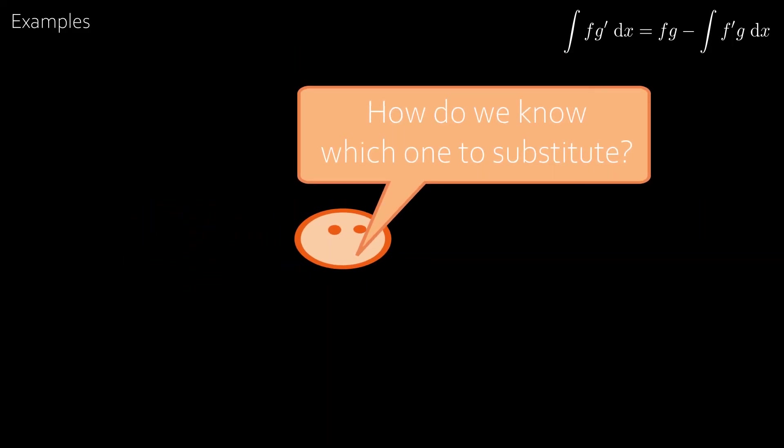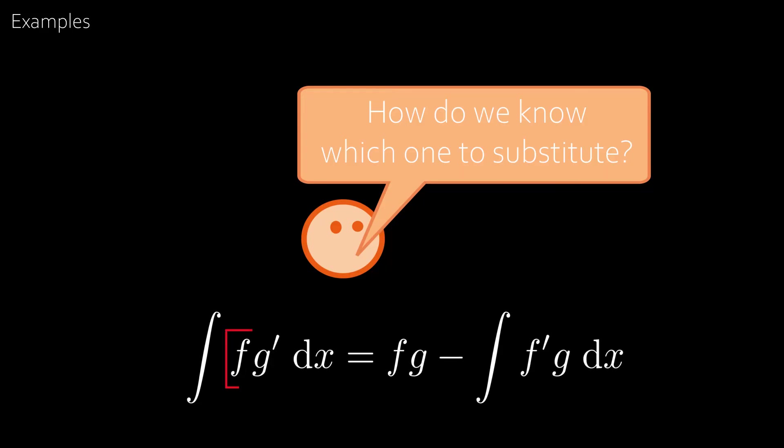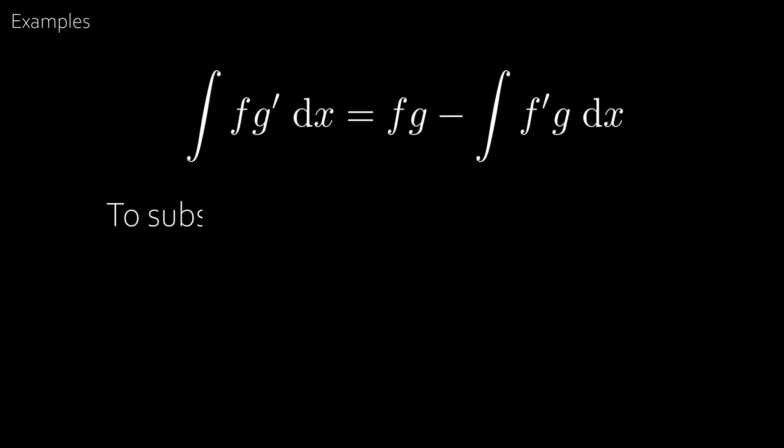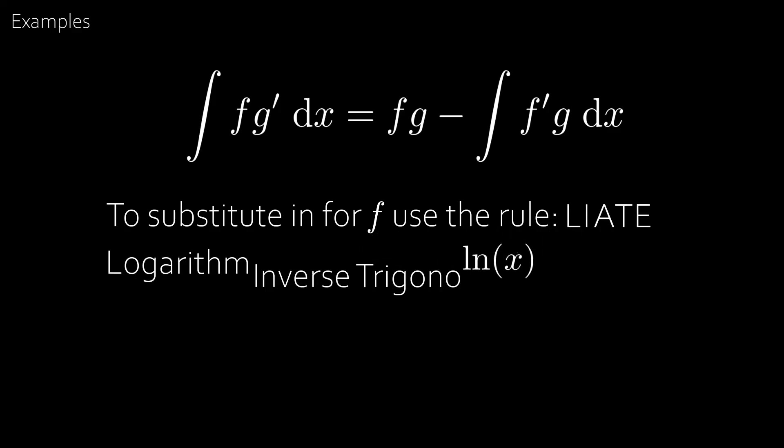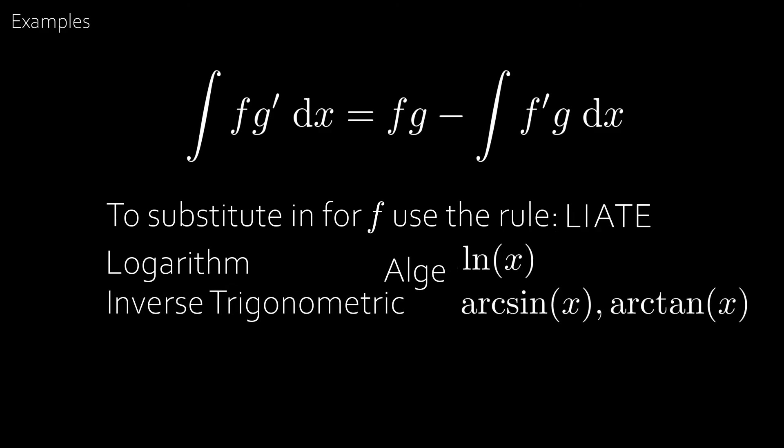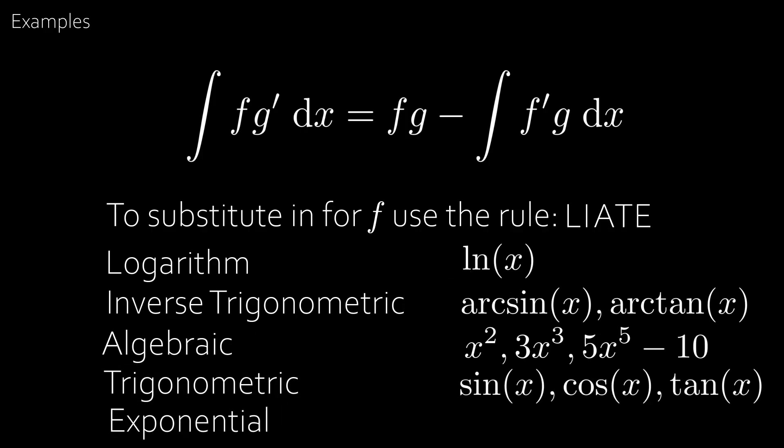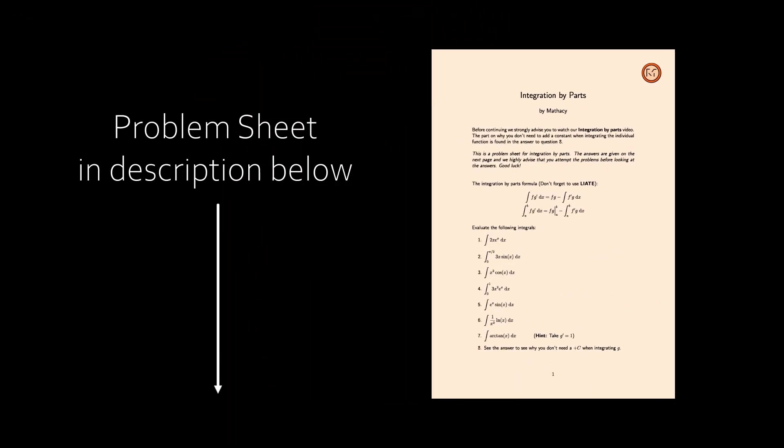Now you're probably thinking how do we know which one to substitute? Because in the formula we could sub in for f or we could sub in for g dash. So to get this right every time the best rule to learn is that to substitute in for f we use the rule LIATE. And LIATE stands for logarithm, inverse trigonometric functions such as arc tan and arc sine, algebraic such as x squared x cubed, trigonometric such as sine cosine tangent and exponential. And what you do is you substitute in for f in the order of LIATE. And to practice this check out our problem sheet in the description below which also has the second special integral where we multiply by one and it also explains why integration by parts is so special and why we don't need a plus c when integrating g dash.